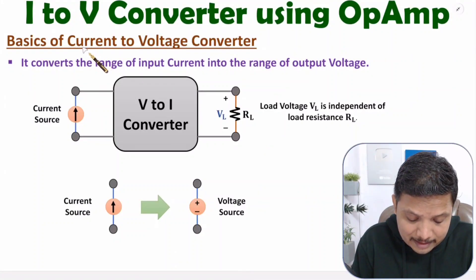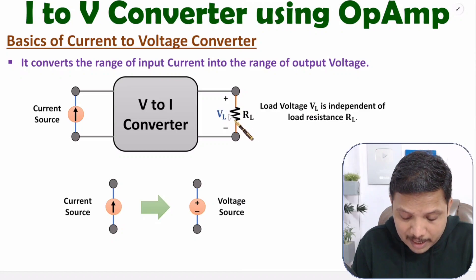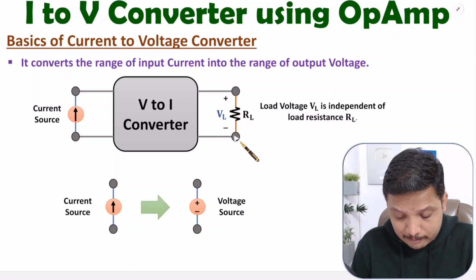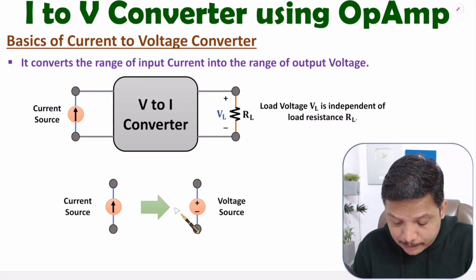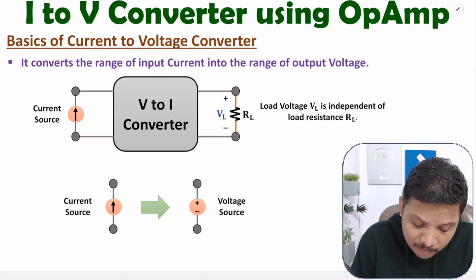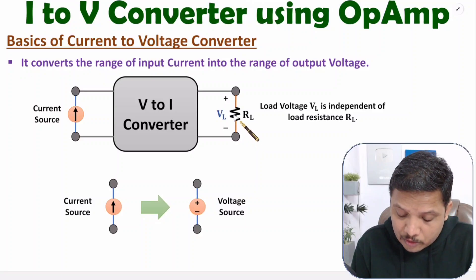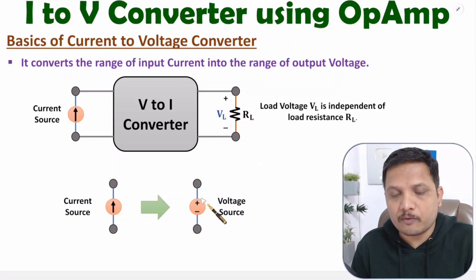From the name itself you can understand: I2V means current-to-voltage converter. So the input will be a current source and at the output we will have voltage. This output voltage VL should be independent of load resistance RL. So variation in VL should not happen because of RL — we will be translating the current source into a voltage source. That is the meaning of current-to-voltage converter: the load voltage should be independent of load resistance.